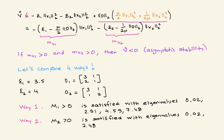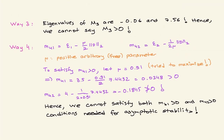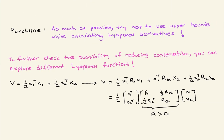The punchline is: as much as possible, try not to use upper bounds when calculating Lyapunov derivatives. If necessary, try to minimize them by using tighter inequalities.